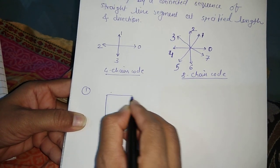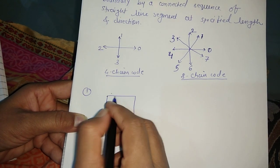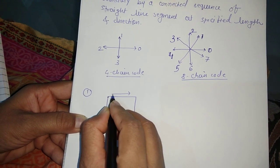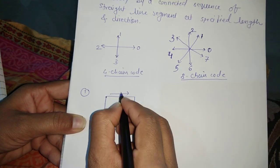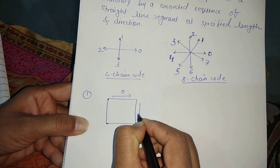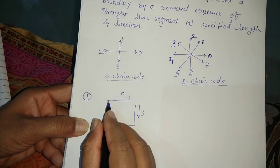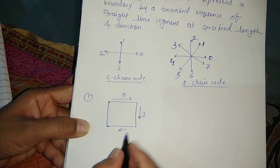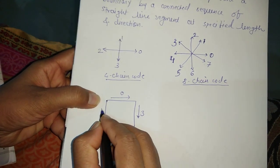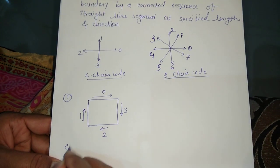We'll take a simple example. A simple shape is given. We start at the origin — the shape is moving towards the right, so the code is 0. Next, at the next point it is moving downward, so the code is 3. Then it moves left to reach back toward the origin, so the code is 2.